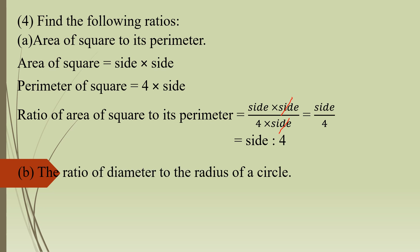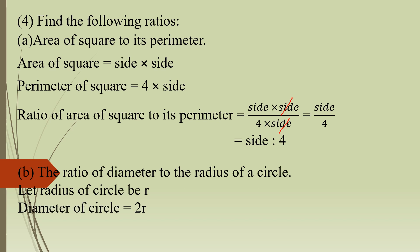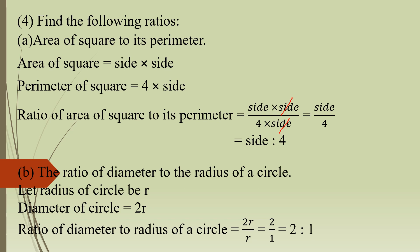Now moving to part B: find the ratio of diameter to the radius of a circle. Let the radius of a circle be R. Then diameter equals 2 times the radius, that is 2R. So the ratio of diameter to radius equals 2R upon R. R cancels with R, so what remains is 2 upon 1. The ratio is 2 is to 1.